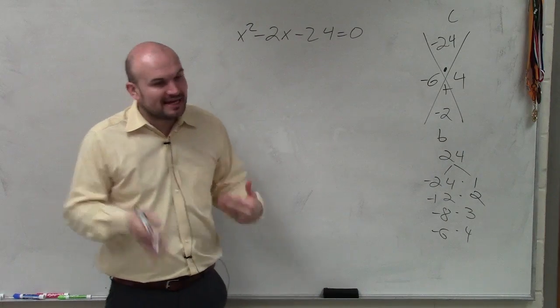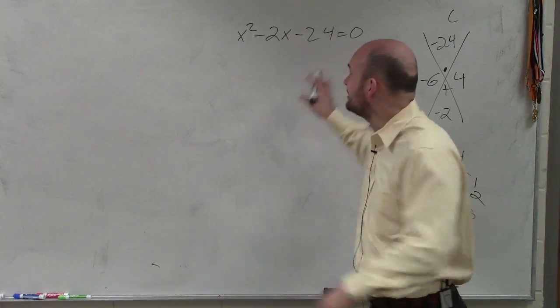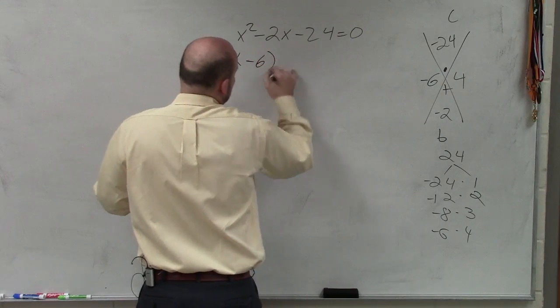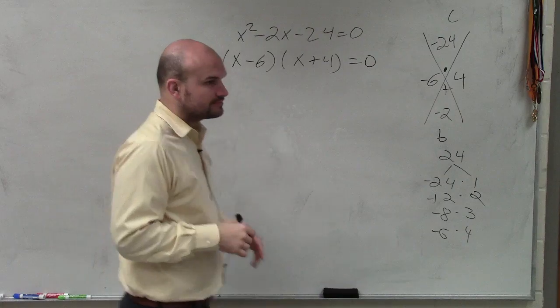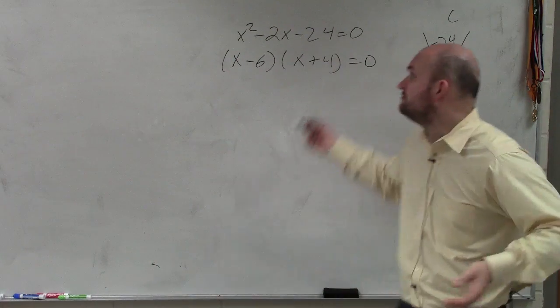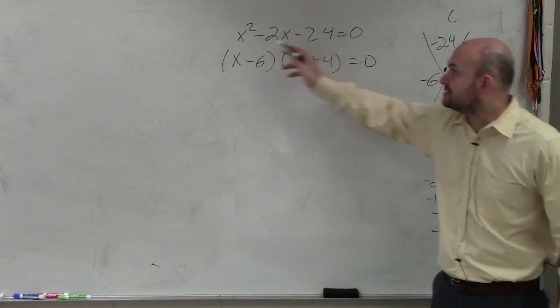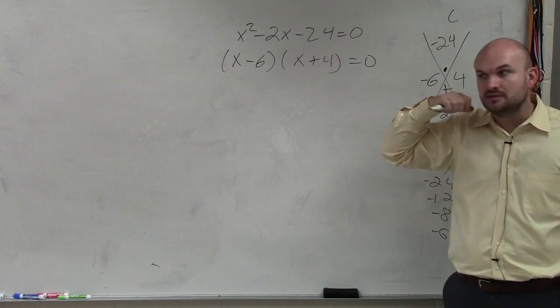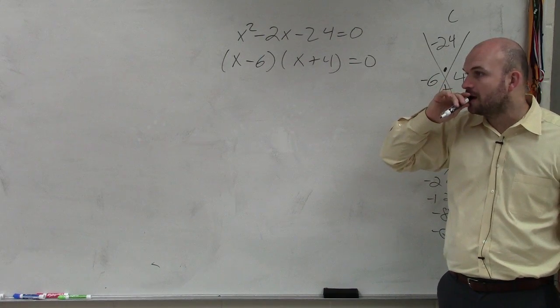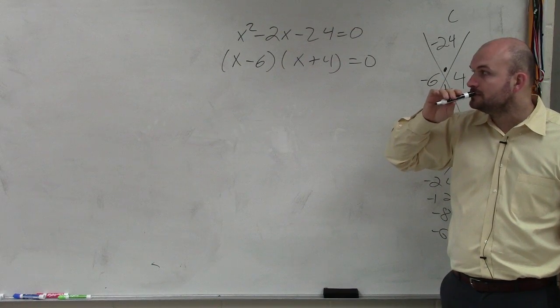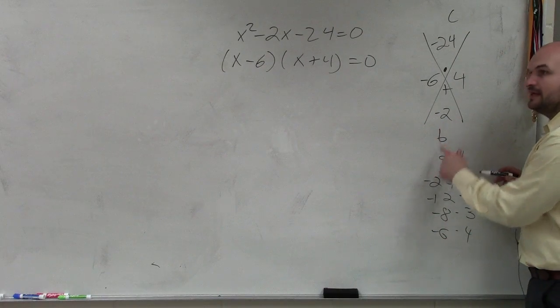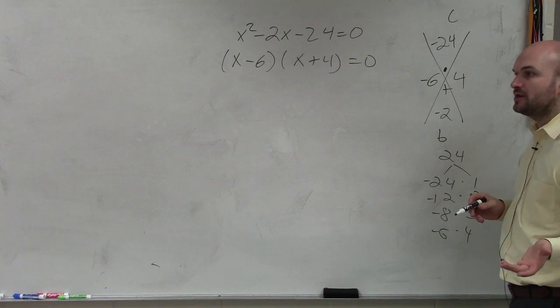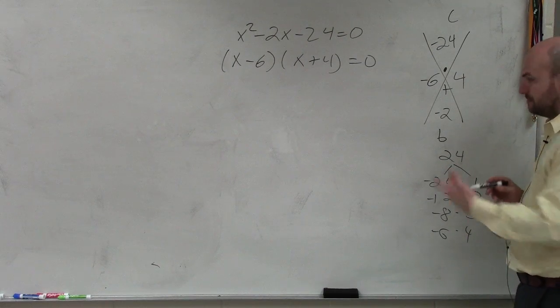So, ladies and gentlemen, what's nice about when a equals one is those are going to be a part of our factors. So I write x minus six times x plus four equals zero. The product of those two factors gives us our original trinomial. Does it matter which one is negative four? Yes. It does. Negative six plus four gives you negative two. If you did six plus negative four, that would give you positive two.